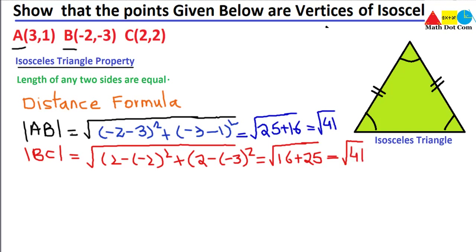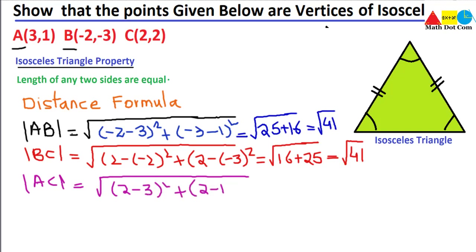We have found two sides are equal, but we find the third side AC as well. The x-coordinates give (2 − 3)² = (−1)² = 1, and the y-coordinates give (2 − 1)² = 1. So AC = √(1 + 1) = √2.